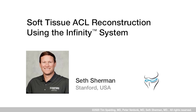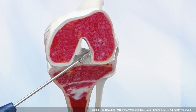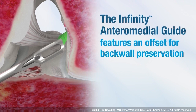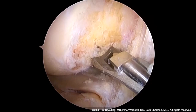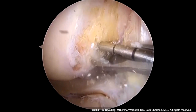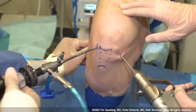I'm Dr. Seth Sherman from Stanford University. It's a privilege to be here sharing unique aspects of our Infinity knee ligament system, developed by a diverse team of world experts working tirelessly over several years. We will show an ACL reconstruction using intermedial portal reaming combined with a full tibial tunnel. The infinity intermedial guide features a 2-millimeter offset for the back wall, a footprint with a 9-millimeter inner and 10-millimeter outer diameter. Once the spade tip is engaged at the femoral footprint, we flex the knee to approximately 110 degrees passing the pin out through the far cortex for safe reaming of the femoral tunnel.